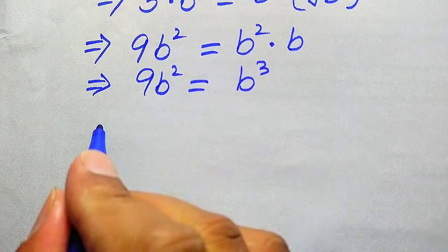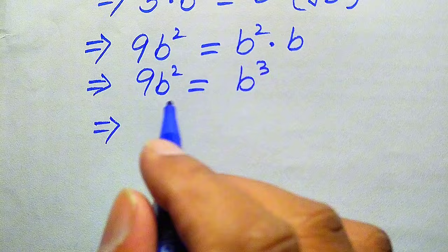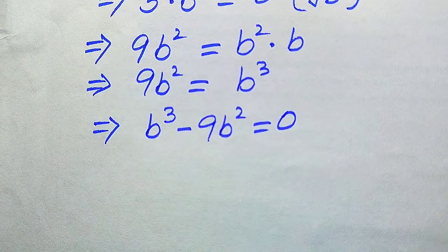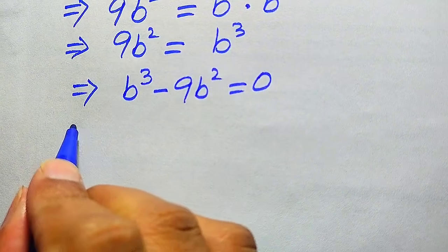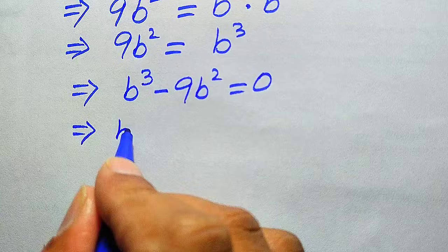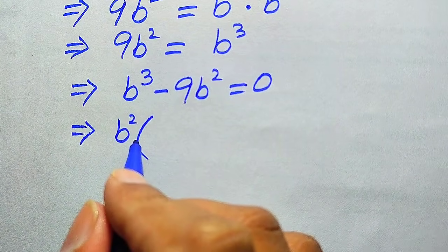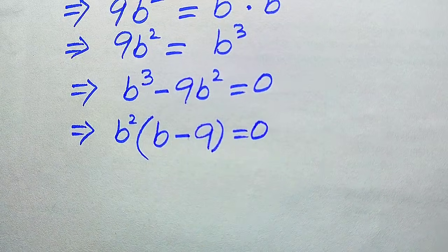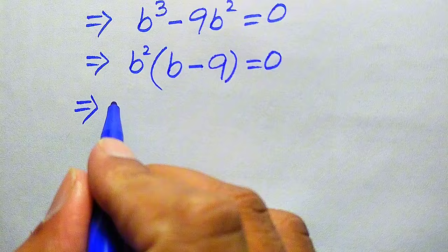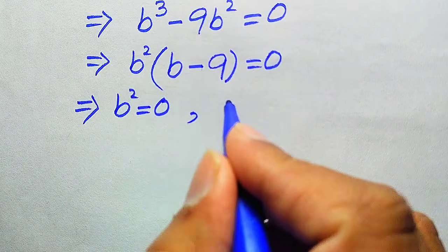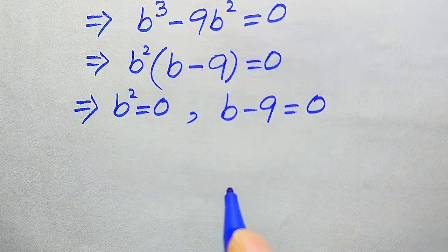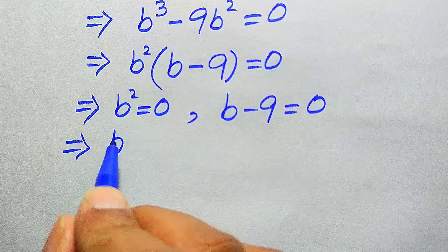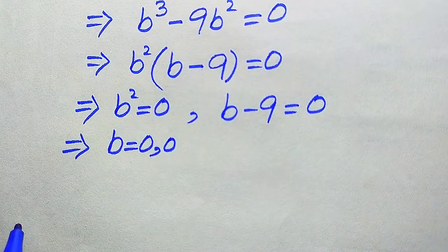Moving 9B squared from the left-hand side to the right-hand side gives B cubed minus 9B squared equals 0. Both terms involve B squared, so we factor out B squared: B squared times (B minus 9) equals 0. This splits into two cases — B squared equals 0, giving the two repeated roots B equals 0 and 0, and B minus 9 equals 0.